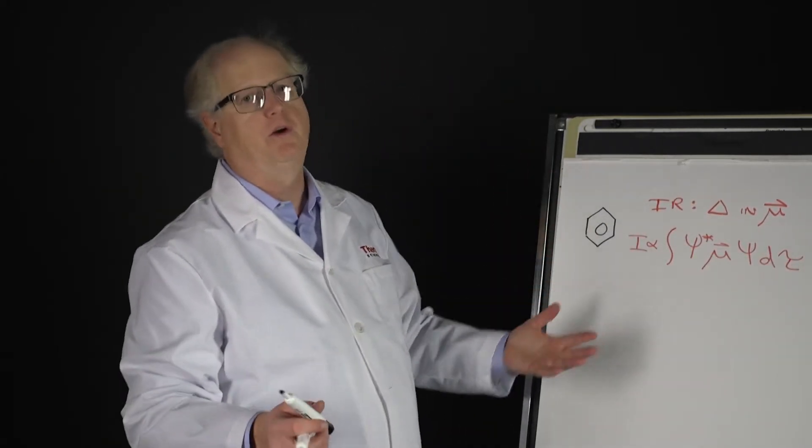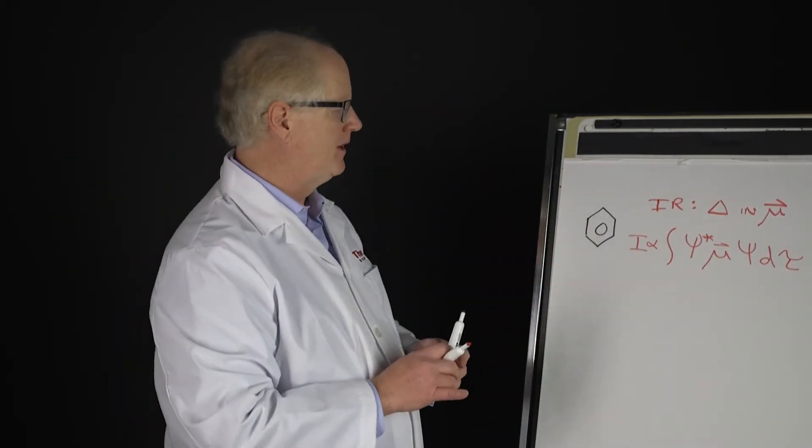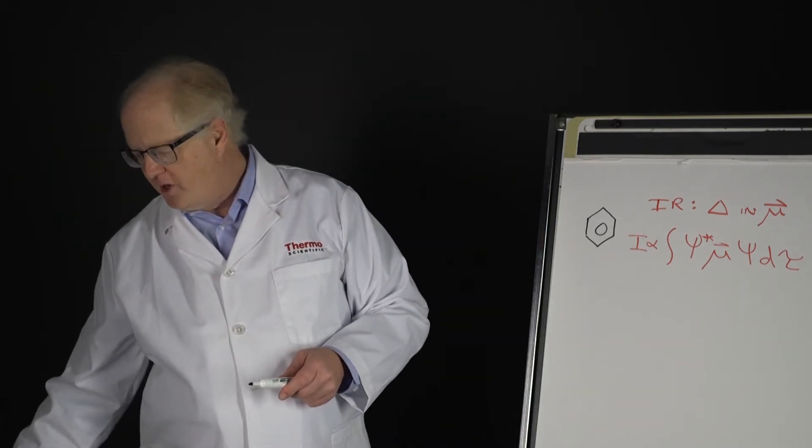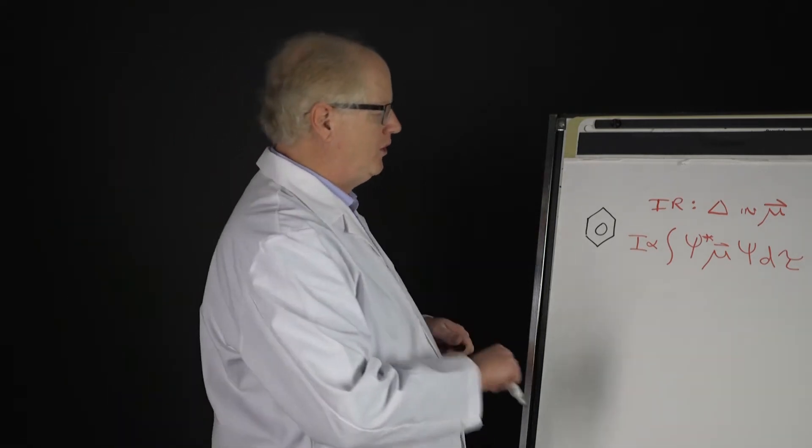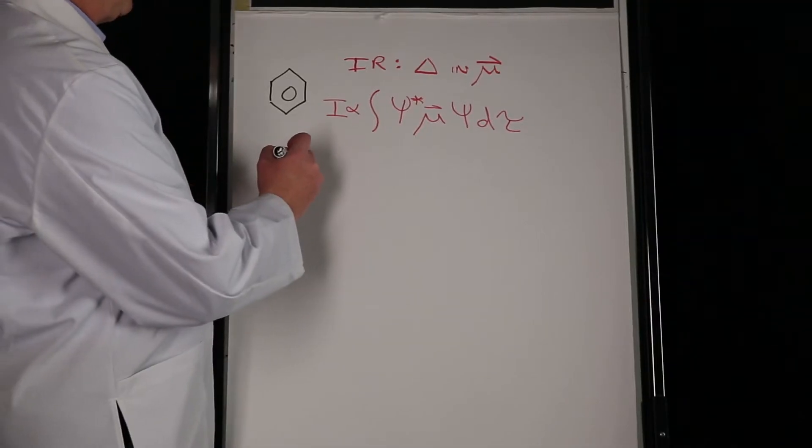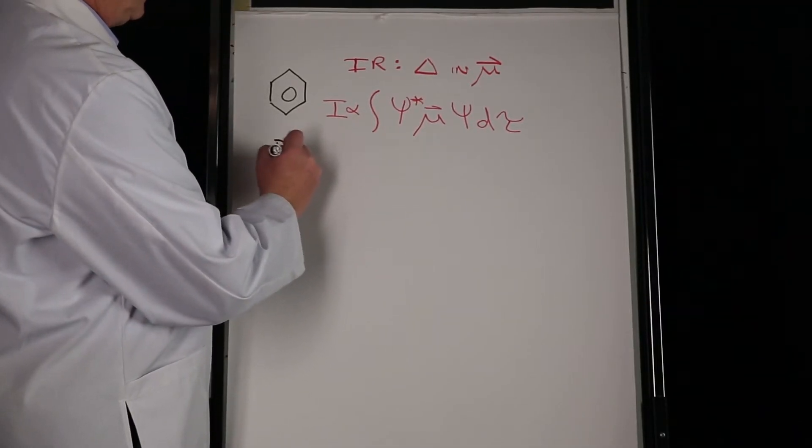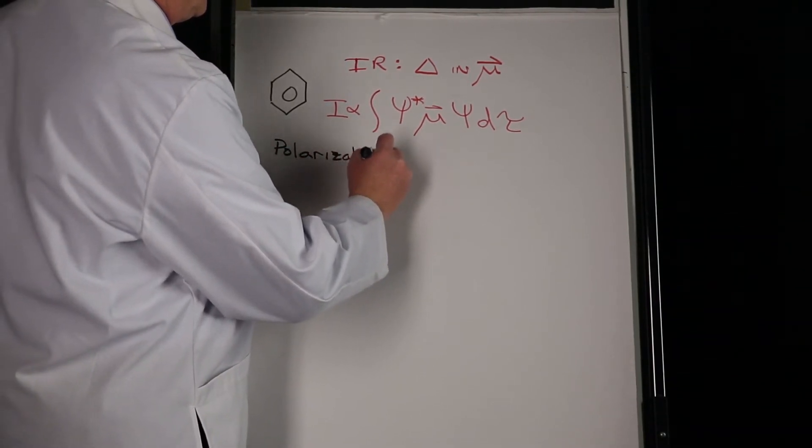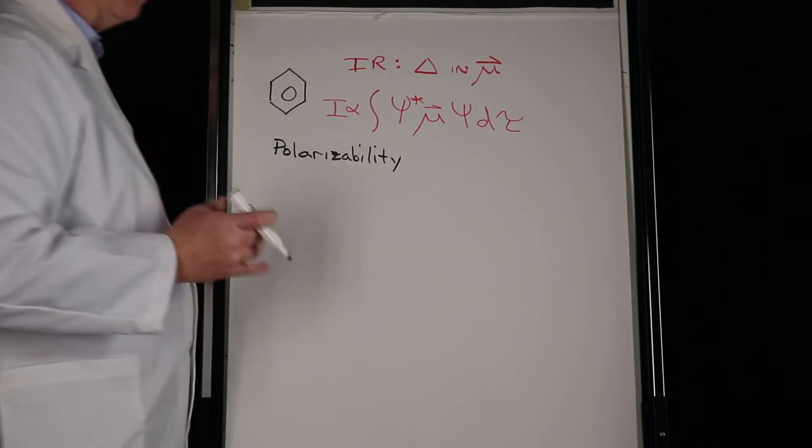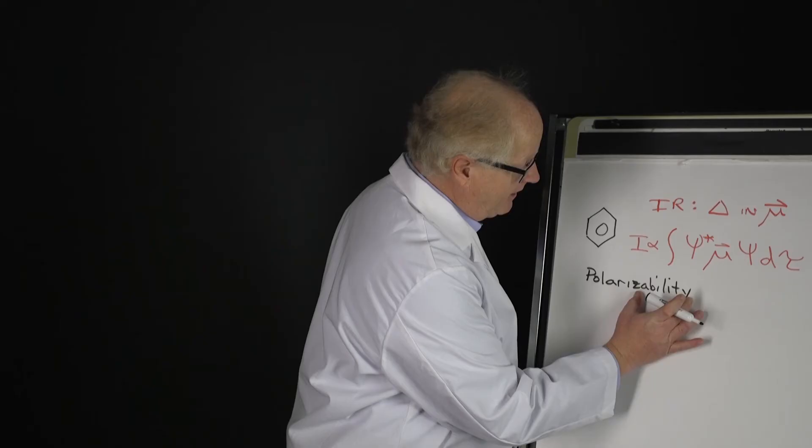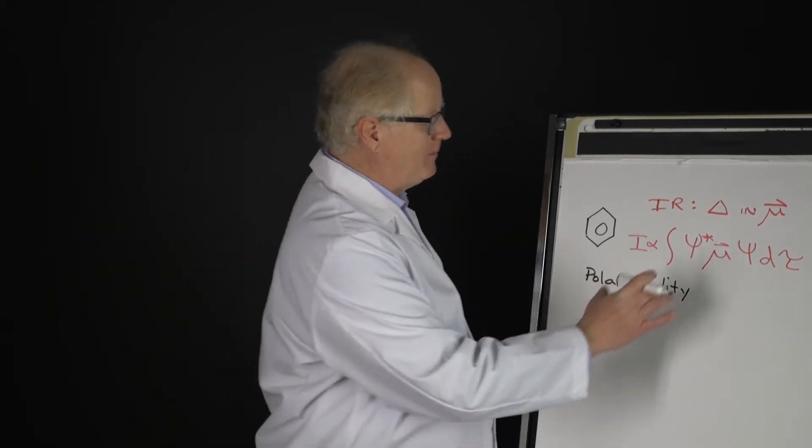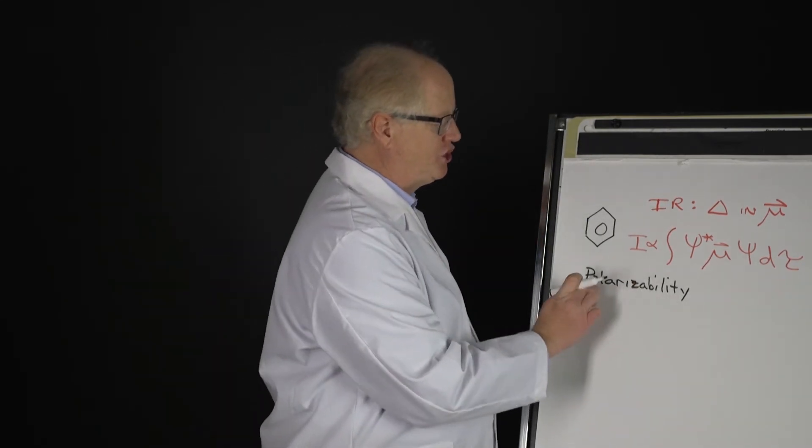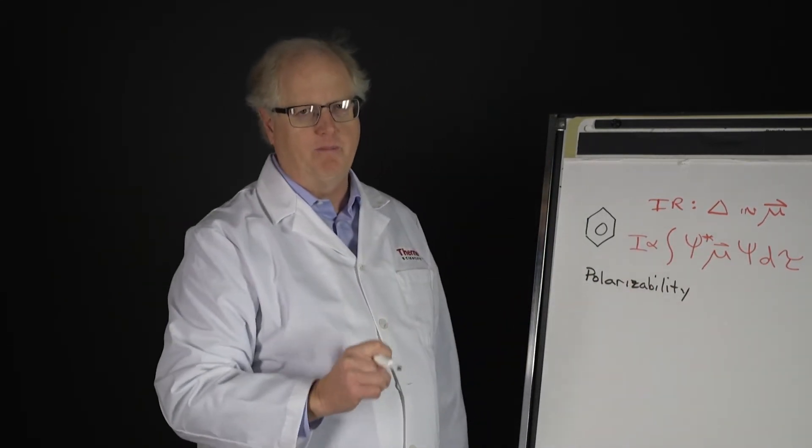In Raman, you're not looking at a dipole moment - you're looking at something called the polarizability. What is polarizability? Quite frankly, it's simple: it's the ability to polarize, the ability of the incident electric field to generate a dipole in the molecule.